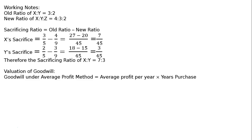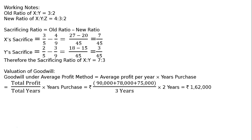Valuation of goodwill under average profit method. Profit of first year is Rs. 90,000; second year Rs. 78,000; third year Rs. 75,000. Divided by 3 years, average profit multiplied by 2 years' purchase equals Rs. 1,62,000. Z's share of goodwill equals Rs. 1,62,000 multiplied by 2/9 — Z's share is 2/9 — that is equal to Rs. 36,000.